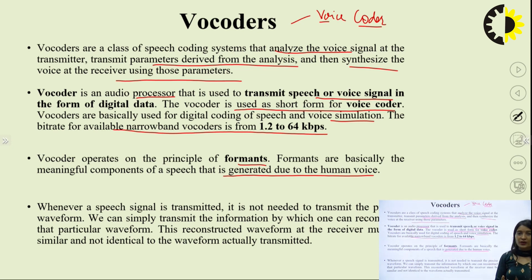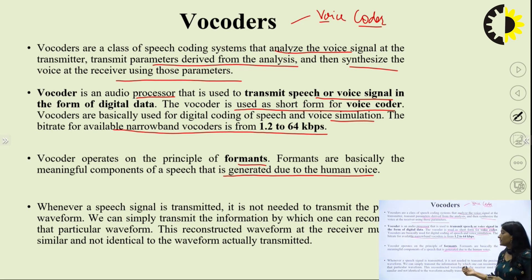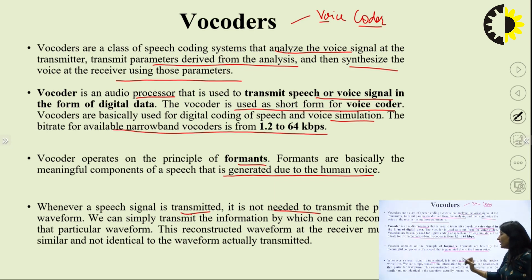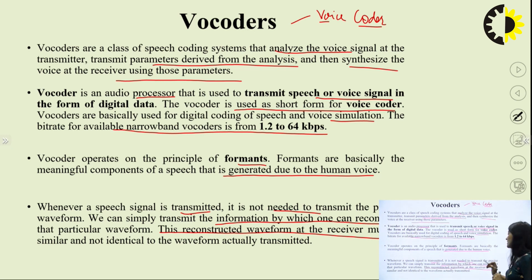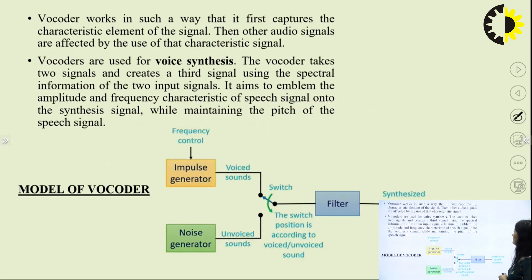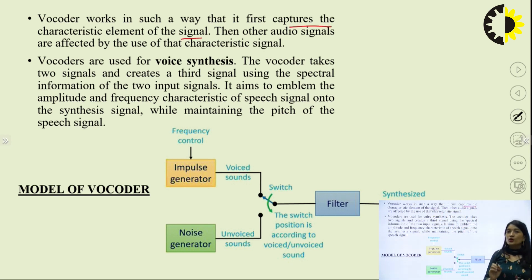The voice produced has some properties, and what we extract are the formants. Formants from speech can be converted into corresponding bits. Whenever a speech signal is transmitted, it is not needed to transmit the precise waveform. We can simply transmit the information by which one can reconstruct that particular waveform. The reconstructed waveform at the receiver must be similar to, though not identical to, the one transmitted. Vocoder works by first capturing the characteristic elements of the signal — the PDF, the autocorrelation function, and the ACF.